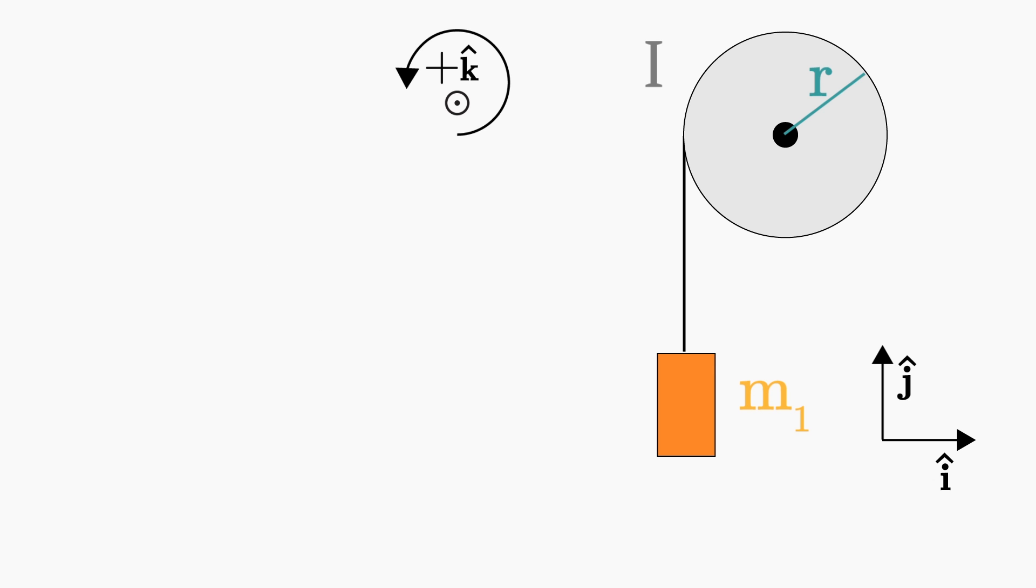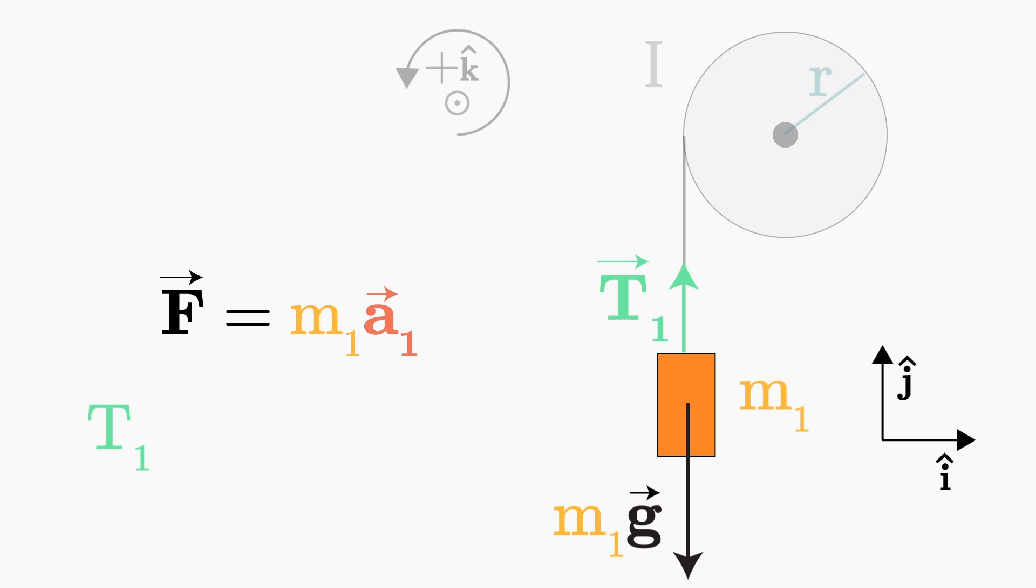Now let's write down Newton's laws for the different parts of the system. First, for the block, we will write down the linear version of Newton's second law. For the sum of forces, we have gravity pointing down and tension pointing up. According to the convention we just defined, T1 is positive and m1g is negative. Notice that since the block is accelerating, T1 minus m1g is not 0 but is equal to m1a1.